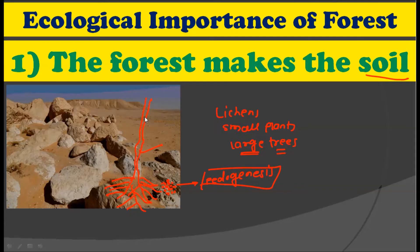So on the barren land, when there is a succession in which first comes the lichen, then small plants and later the large plants, these large plants grow luxuriantly and their roots grow underground to great depth. They cut through the hard rocks into smaller pieces, which are then converted into soft soil. So the forest performs the very important ecological function of making the soil.